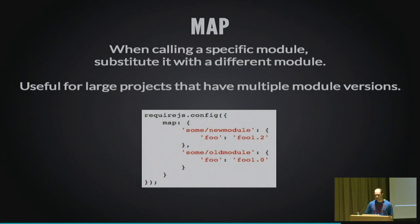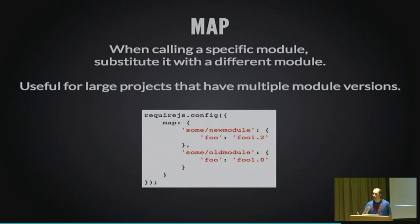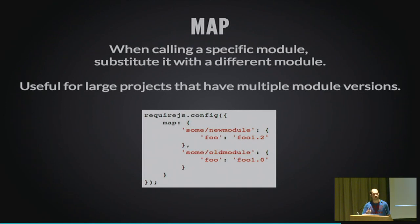There's also a `map` configuration, useful when rolling out features. When a module is required by name, you can substitute it with a different version. For a shopping cart, you can map calls to version 1.2, then 1.3, then 1.4 as enhancements roll out. If something goes wrong in production, you can roll back by switching the mapping from 1.4 back to 1.3. This is very useful for managing versioned module deployments.